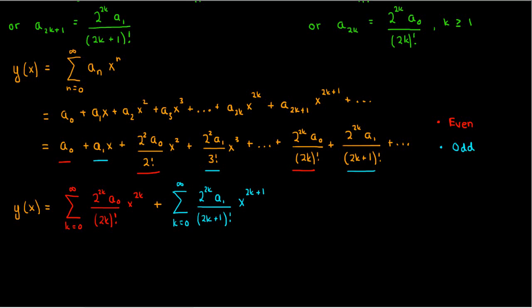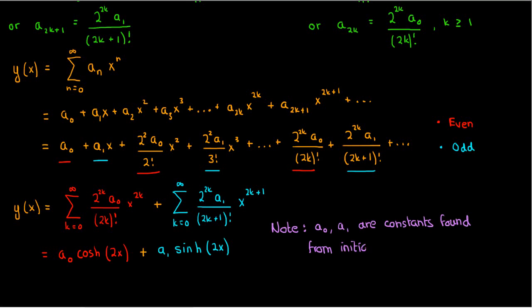It turns out that the first summation is just the Taylor expansion of the hyperbolic cosine, or cosh(2x), and the second summation is just the Taylor expansion of the hyperbolic sine, or sinh(2x). So the solution to our ODE in simplified form is a₀·cosh(2x) plus a₁·sinh(2x). The unknowns a₀ and a₁ would typically be found from the initial or boundary conditions, so we leave them as is.